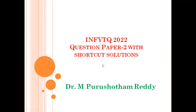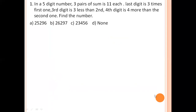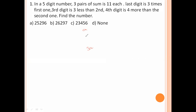Now let's look at the first question. In a five-digit number, three pairs sum to 11 each. The last digit is three times the first one — so if we assume the first digit is A, the last digit is 3A. The third digit is three less than the second digit; if the second digit is B, the third digit is B minus 3. The fourth digit is four more than the second one, so B plus 4. Now find the number.